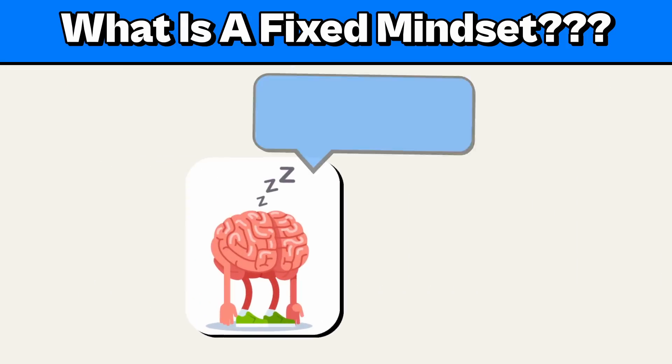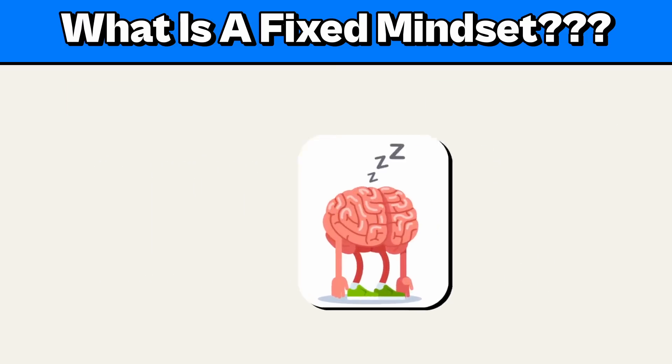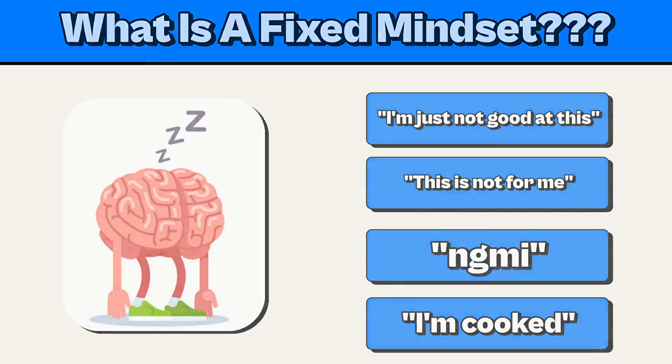People with a fixed mindset often think they're either good at something or they're not. They don't take into account growth or improvement. They find it hard to believe that they can go from being bad to being good. They might say things like, I'm just not good at math, or I'll never be able to understand programming. This mindset can limit potential and discourage learning and development.